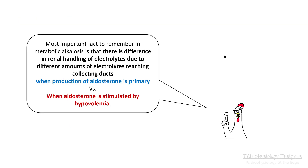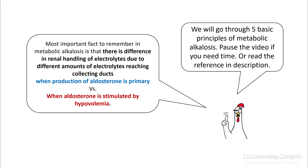The most important fact to remember in metabolic alkalosis is that there is a difference in renal handling of electrolytes due to different amounts of electrolytes reaching the collecting duct, and this is different when the production of aldosterone is primary versus when aldosterone is stimulated by hypovolemia. So we'll go through five basic principles of metabolic alkalosis.